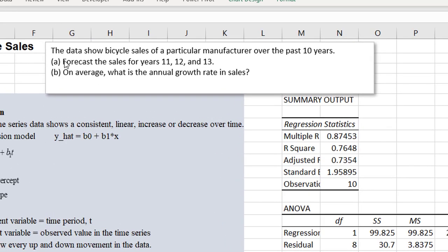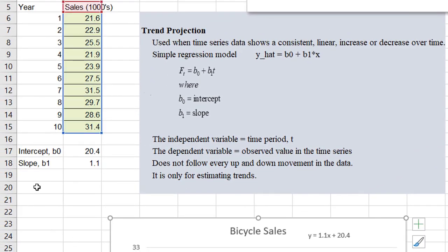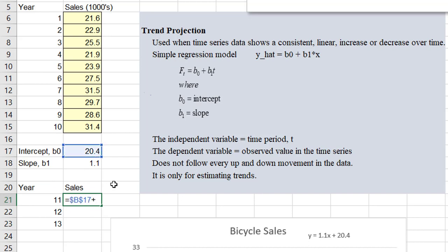Okay, so we are asked to forecast the sales for years 11, 12, and 13. So we'll put the results here, 11, 12, and 13. And sales is, okay, 20.4 dollar sign plus 1.1 dollar sign times 11. Okay, so, and then I could just copy this down by dragging.